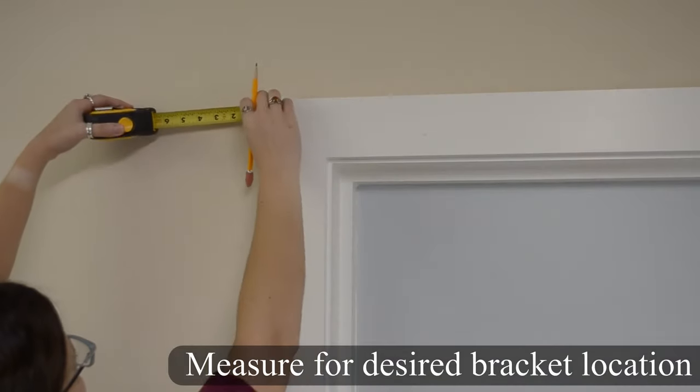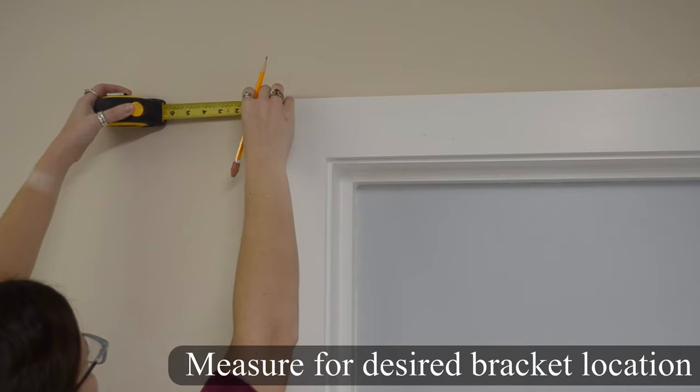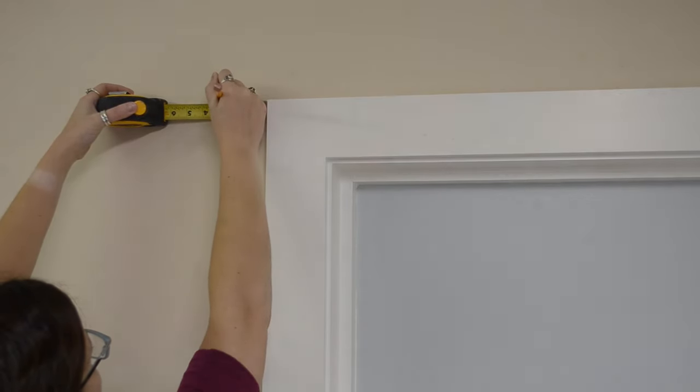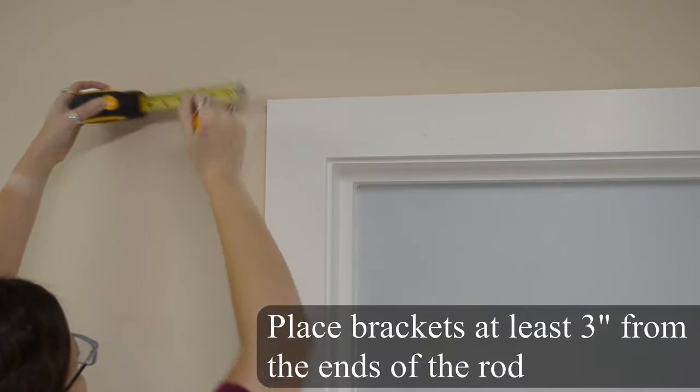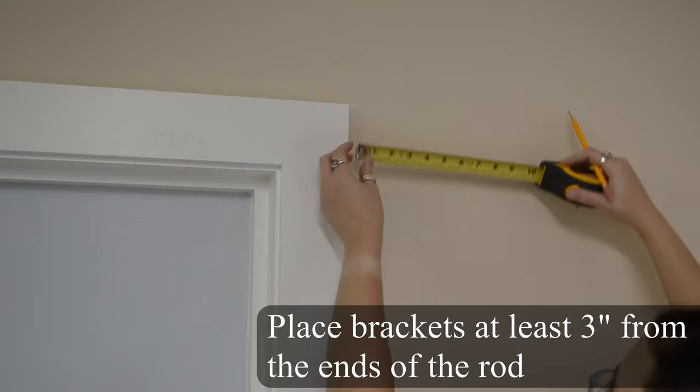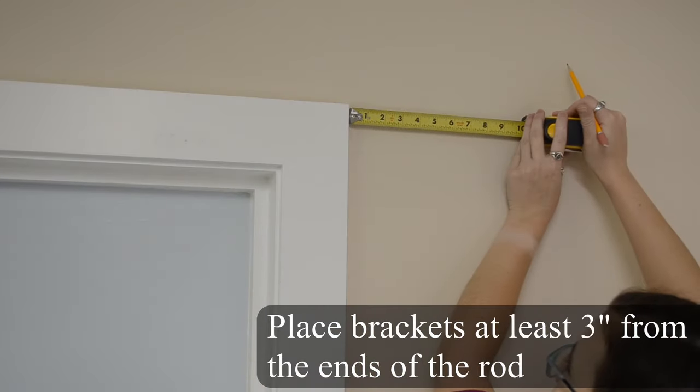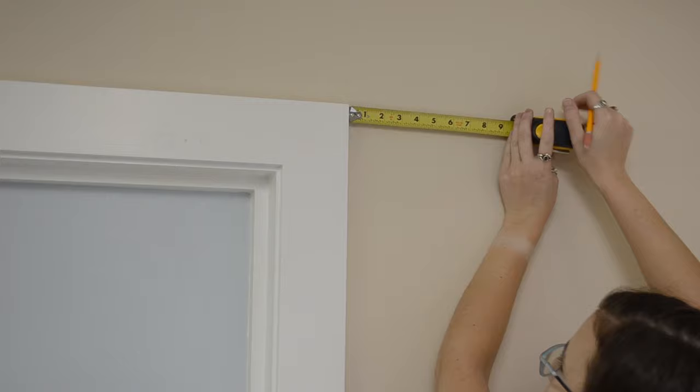Begin by measuring on the left side of your window casing and marking the desired bracket location with a pencil. Please note it is a good rule of thumb to place the brackets at least 3 inches from either end of the rod. Continue this same step to the right side of your window casing ensuring that the sides are even.